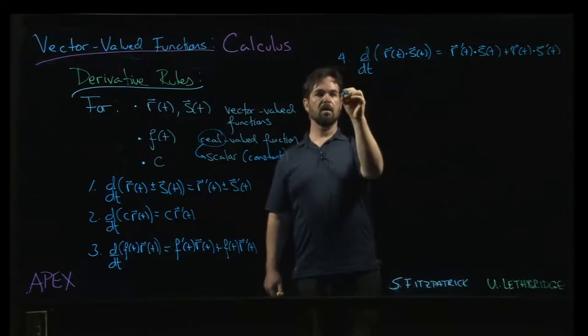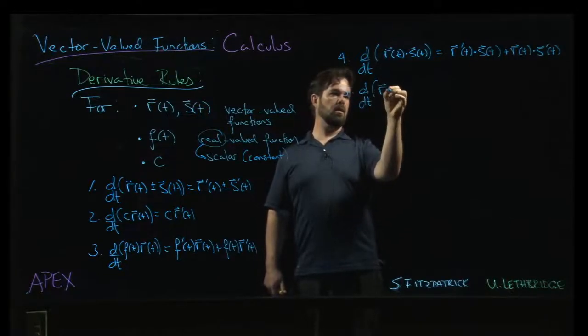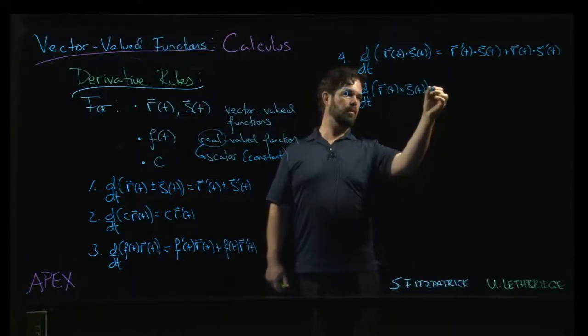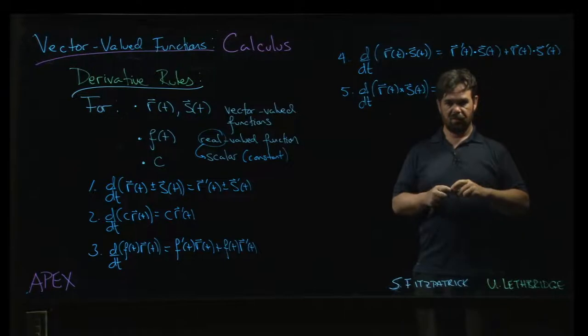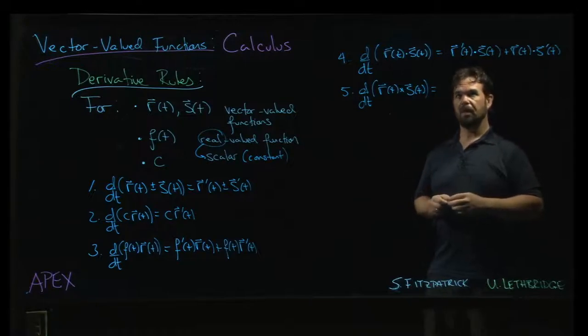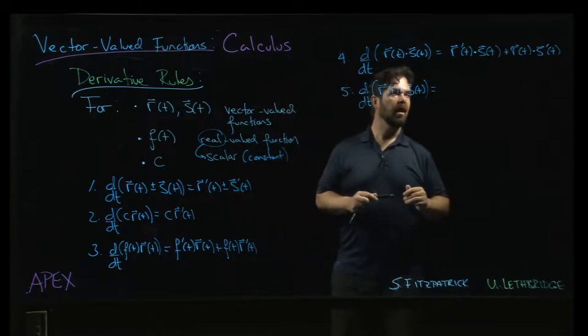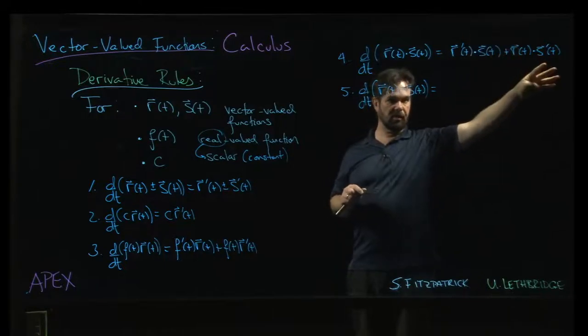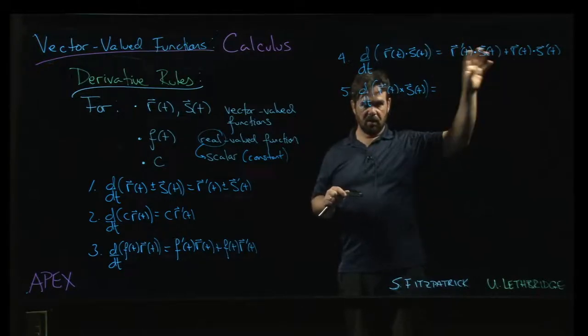Oh, and there's one more product. We can also do a cross product, r of t crossed with s of t. Now, here you have to be a little bit careful. And this is sort of dependent on your habits when it comes to writing out the derivative, the product rule for derivatives. So I try to be, all the way from calc 1 and all the way through, I try to be consistent. I'm always following the pattern of derivative of the first times the second plus first times the derivative of the second. Some people like to always kind of put the derivative as the second term in the product, things like that.